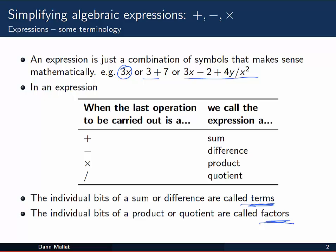the individual parts of a sum or a difference are called terms. So up here, with 3 plus 7, 3 and 7 are terms of that sum. On the other hand, in 3x, 3 and x are factors of the product 3x.